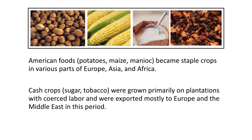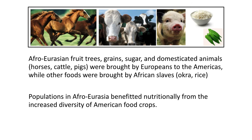American foods like potatoes, maize, and manioc became staple crops in various parts of Europe, Asia, and Africa. Cash crops like sugar and tobacco were grown primarily on plantations with coerced labor and exported mostly to Europe and the Middle East. Afro-Eurasian fruit trees, grains, sugar, and domesticated animals like horses, cattle, and pigs were brought by Europeans to the Americas, while other foods like okra and rice were brought by African slaves. Populations in Afro-Eurasia benefited nutritionally from the increased diversity of American food crops, and you do see a bounce back in populations in Africa and Europe because of better access to these plants.